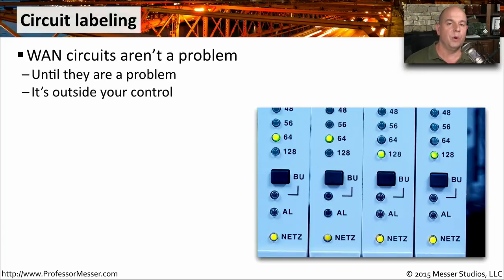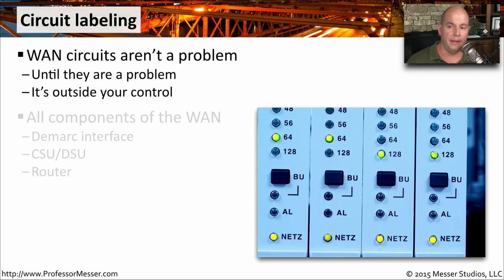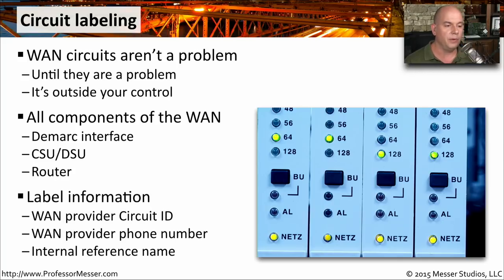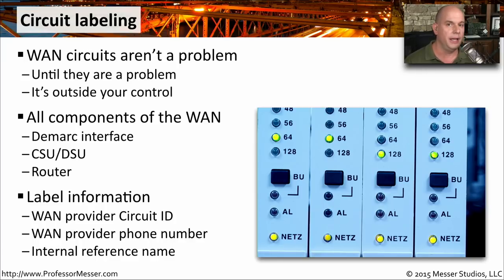WAN connections are usually running, but when they stop working, you need to be able to find out where that particular link might be. You need to label the demarcation interface and label the CSU-DSU with the relevant information. You may want to label the router as well, so you know all the different components in use for that WAN connection. You should include the WAN provider's circuit ID, contact information or phone numbers to call in case of a problem, and the internal name for the connection so everyone in your organization understands the naming convention.